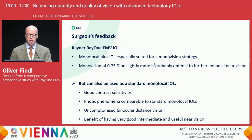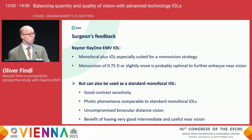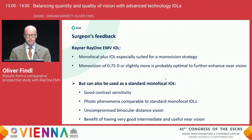From my perspective, the Ray-1 EMV IOL is a monofocal plus especially suited for a monovision strategy. It probably makes sense to go for a little more monovision — about 0.75 diopters — because that will give you more near vision. I know that Graham goes to 1.25 diopters, which is a real monovision approach that needs to be discussed with patients beforehand. But you can also use it as your standard monofocal IOL with very good contrast sensitivity. The photic phenomena seem comparable to standard monofocal IOLs, with uncompromised binocular distance vision.